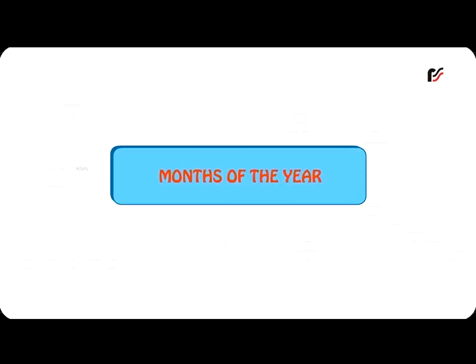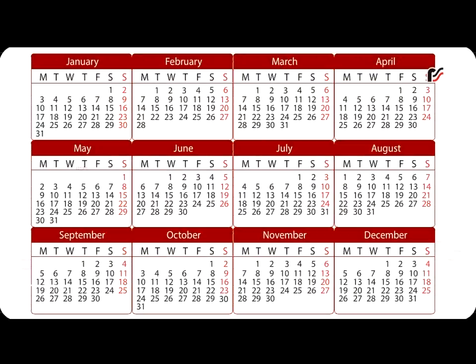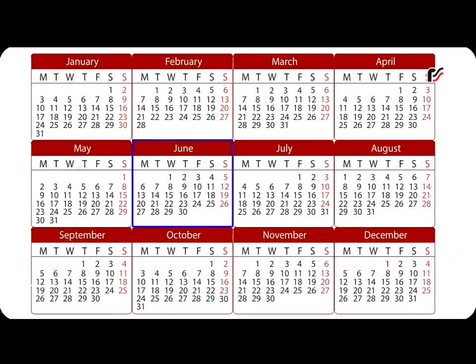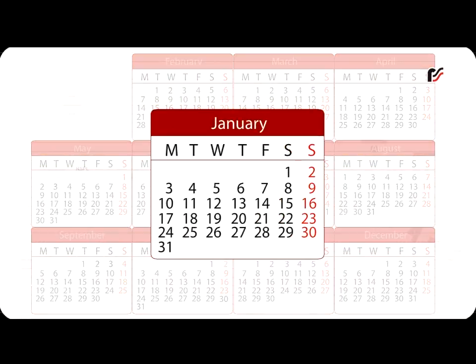Months of the year: There are twelve months in a year — January, February, March, April, May, June, July, August, September, October, November, and December. The month January has 31 days.